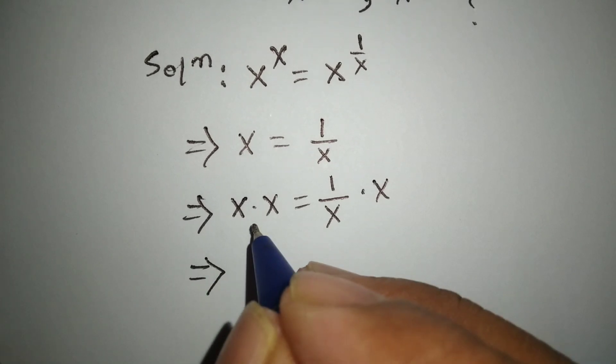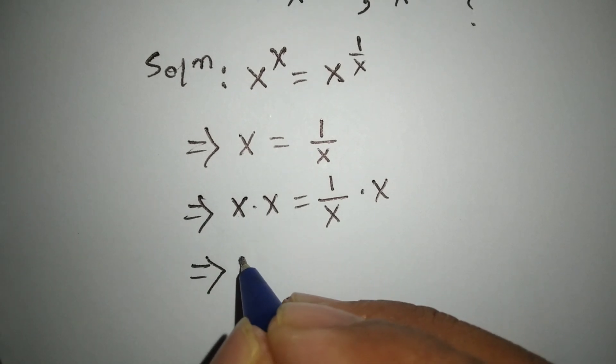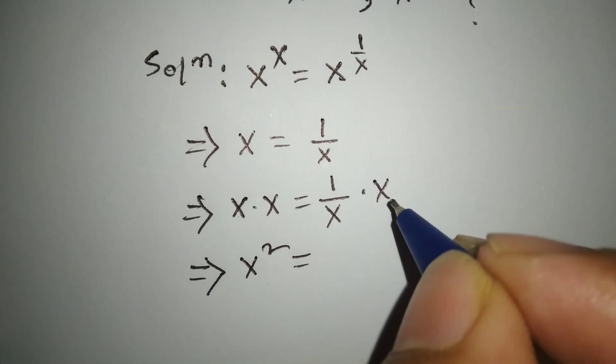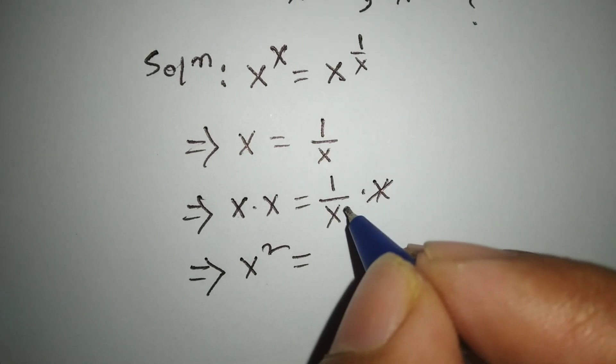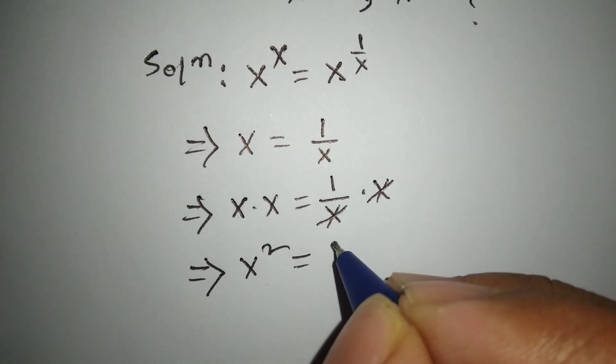Or x times x equals x squared equals. This x and this x cancel by each other. Here remain only 1.